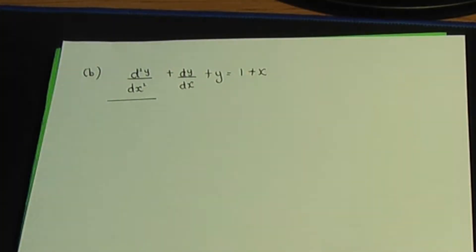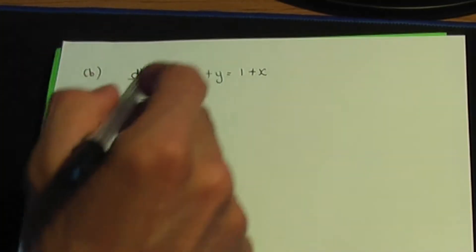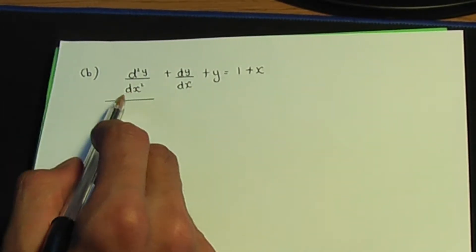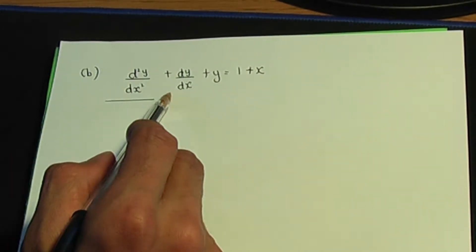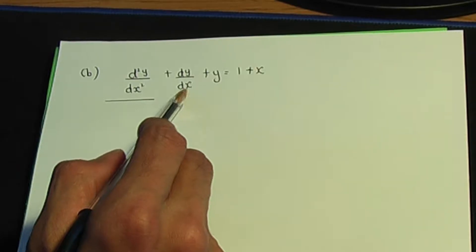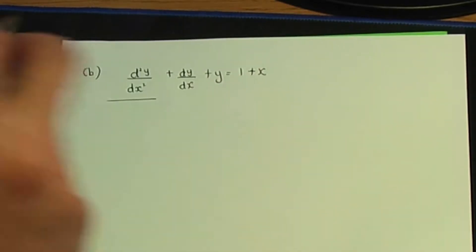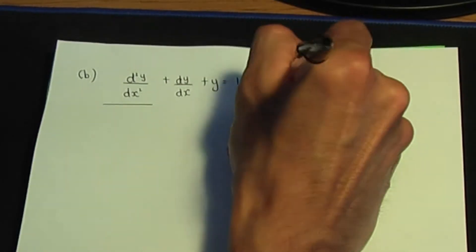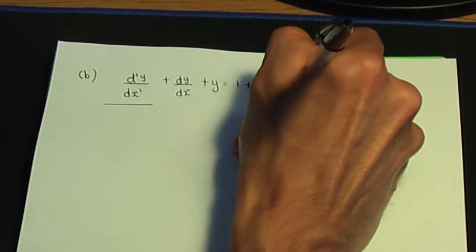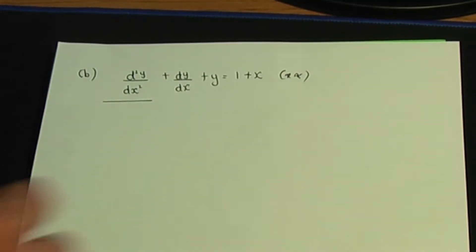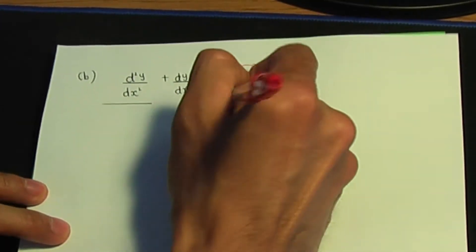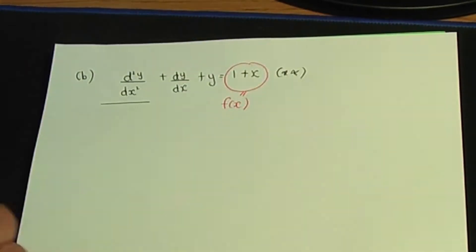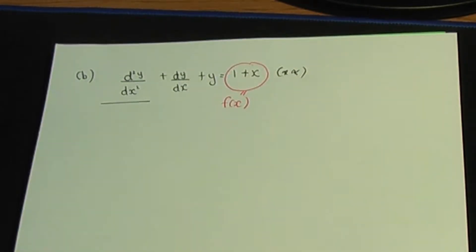Here's the next example, part b. We have the second order differential equation d²y/dx² + dy/dx + y = 1 + x. Our f(x) is 1 + x, so it's linear.